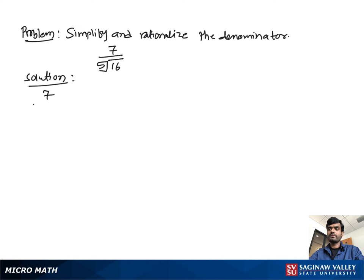Simplify and rationalize the denominator: 7 over 5th root of 16. You can also write this as 7 over 5th root of 2 to the 4th.